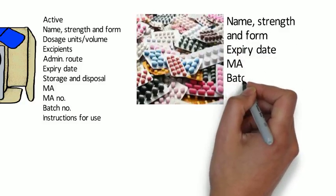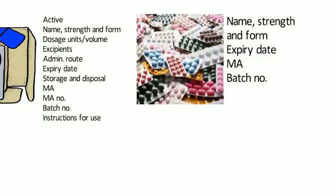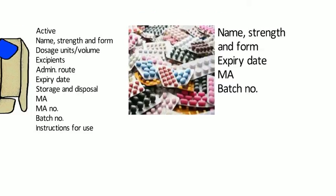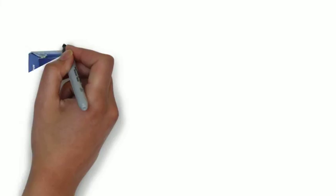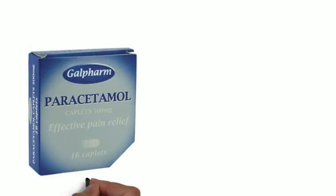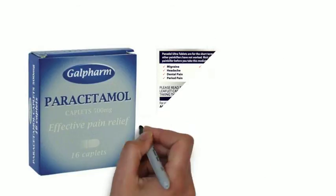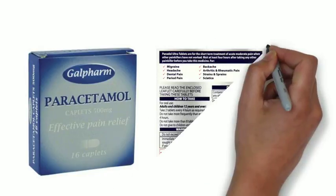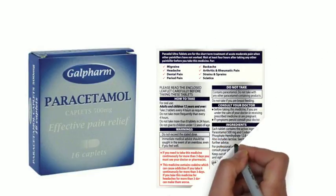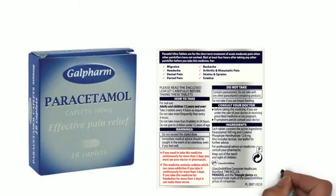There may be additional labelling required due to the legal classification of the product. In addition to standard labelling, there may be extra labelling requirements for P medicines, POMs, and those that contain paracetamol. Medicines containing paracetamol must specifically state on the box that the medicine contains paracetamol.